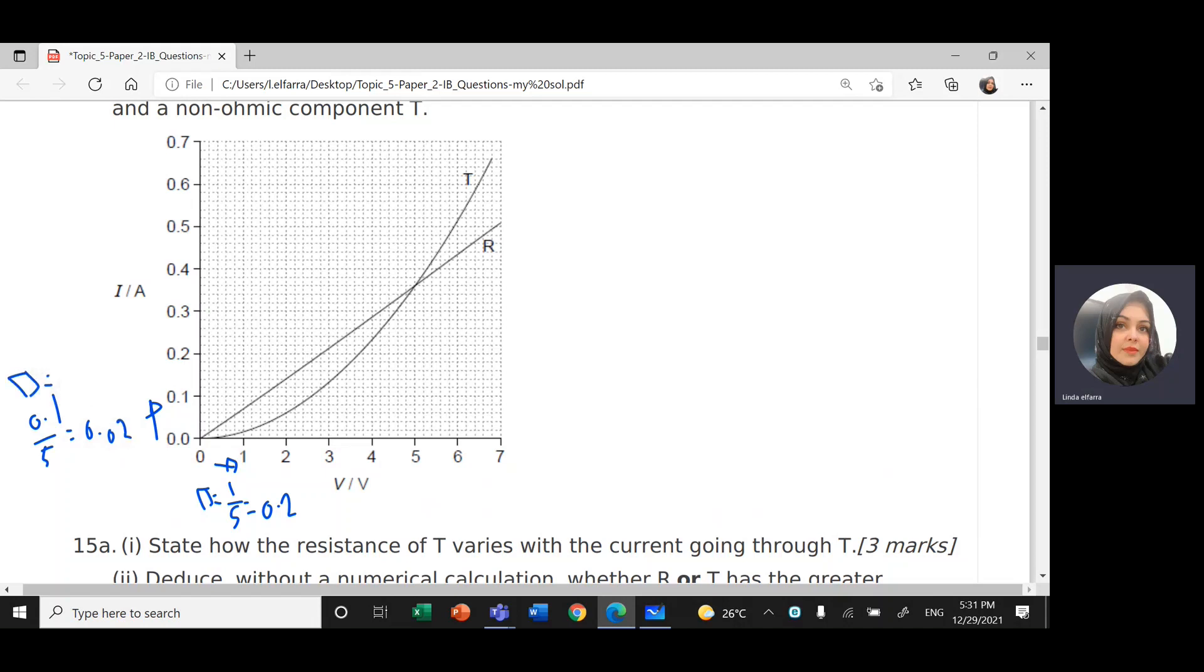So let's take voltage. I'm going to make a table. Here, V, and each time I'm going to calculate the current. I'll take, for example, 2, and then 3, and I can take 5.